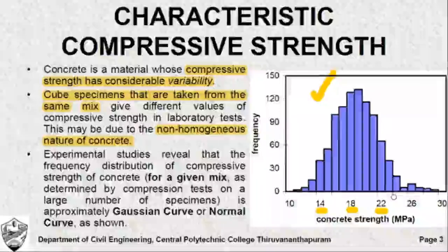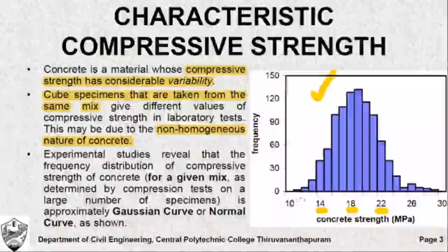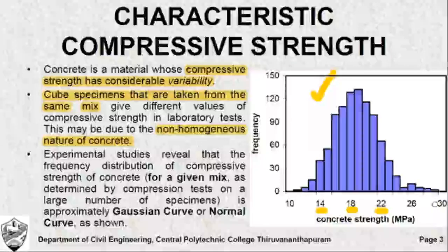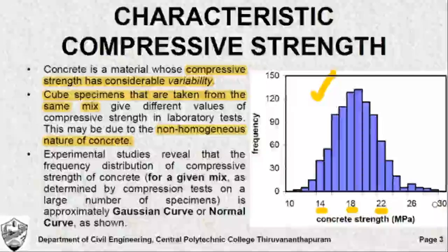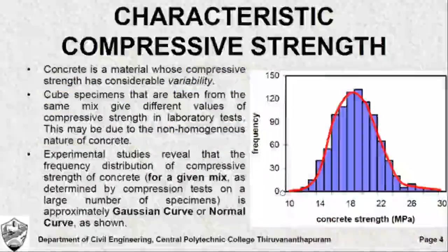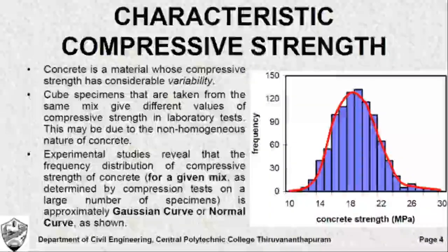From this graph, it is evident that the same mix gives a range of strength of concrete and it is very difficult to fix one particular value. You cannot say your concrete mix shall give 30 MPa or 25 MPa — the same mix gives a range of compressive strength. This shape resembles a bell-shaped curve.